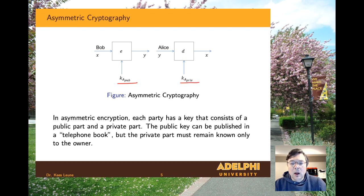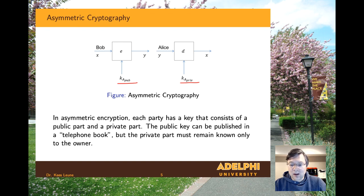In the example here, Bob wants to send a message to Alice — maybe a reply to something Alice sent earlier. Bob takes his plaintext and encrypts it using Alice's public key, which he may have looked up or Alice told him in the past; either way, it is freely shareable. Once Bob applies the encryption algorithm and the key to his plaintext, he yields the ciphertext, which can be sent. The ciphertext is then input into the decryption algorithm using Alice's private key, which yields the original plaintext again. The public key can be shared, but the private key has to remain absolutely secret and known only to one entity.